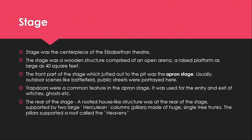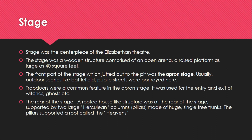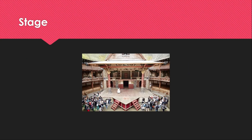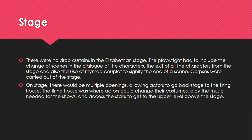This roof above the pillars was called the heavens or the shadows. Another notable feature about the Elizabethan stage is that there were no curtains.